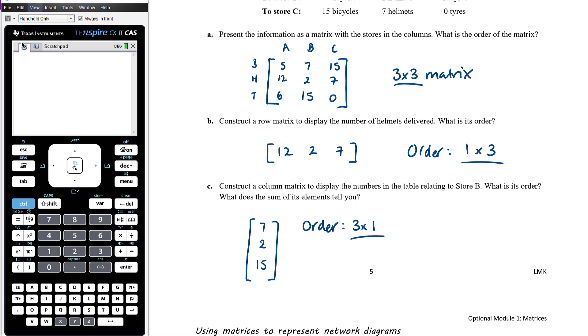What does the sum of its elements tell you? So the sum of the elements, the elements being each of the numbers in the matrix, would be seven plus two plus fifteen. Seven plus two is nine, plus fifteen is twenty-four. And think about what that tells us. So remember, the numbers in this particular column matrix are relating to store B. So this tells us that twenty-four items, a combination of bicycles, helmets and tyres, twenty-four items were delivered to store B.